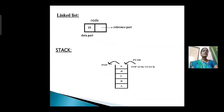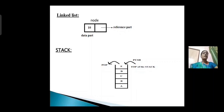Next, linked list. A linked list is a collection of nodes which maintain a linear order with links. The node has two parts: 10 is the data part and the next one is the reference part.